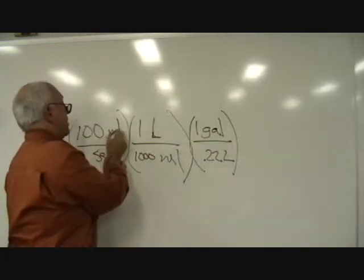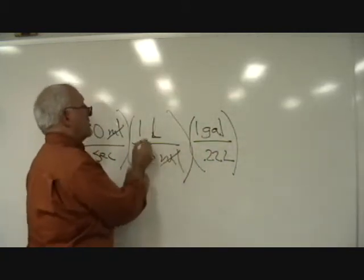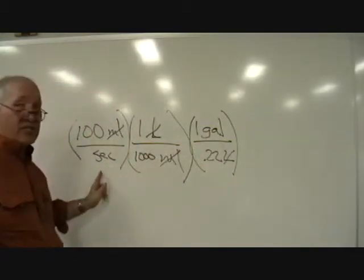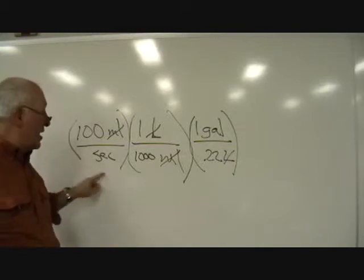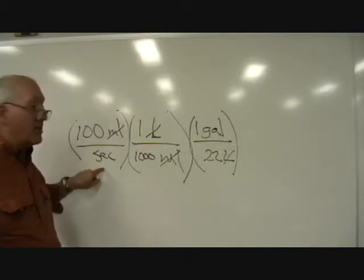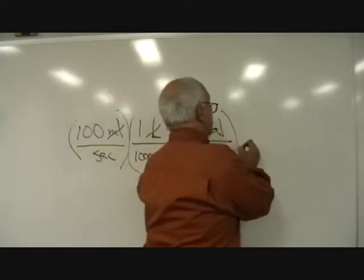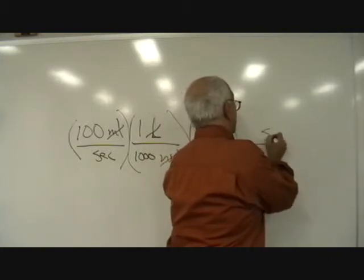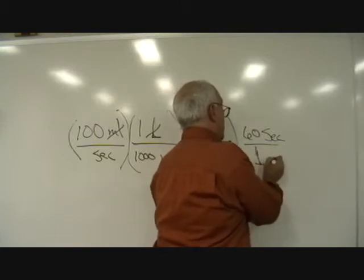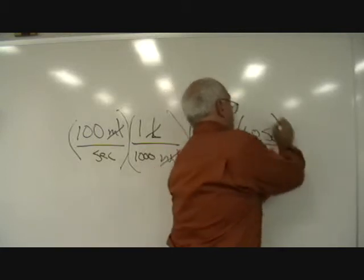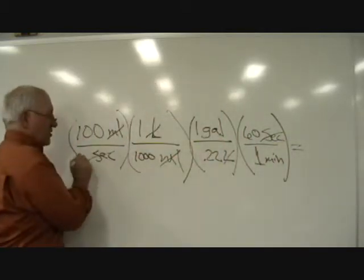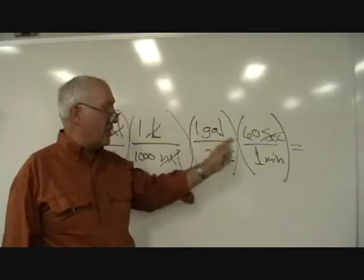So I'm going to have my milliliters are going to cancel my milliliters. My liters are going to cancel my liters. And I end up with gallons per second. But I wanted gallons per minute. So now I need to convert my seconds to minutes. I have seconds on the bottom to get rid of the seconds. I need to put seconds on the top over here. And I know that 60 seconds is the same thing as one minute. So now my seconds cancels my seconds and I have my units that are left are gallons per minute.